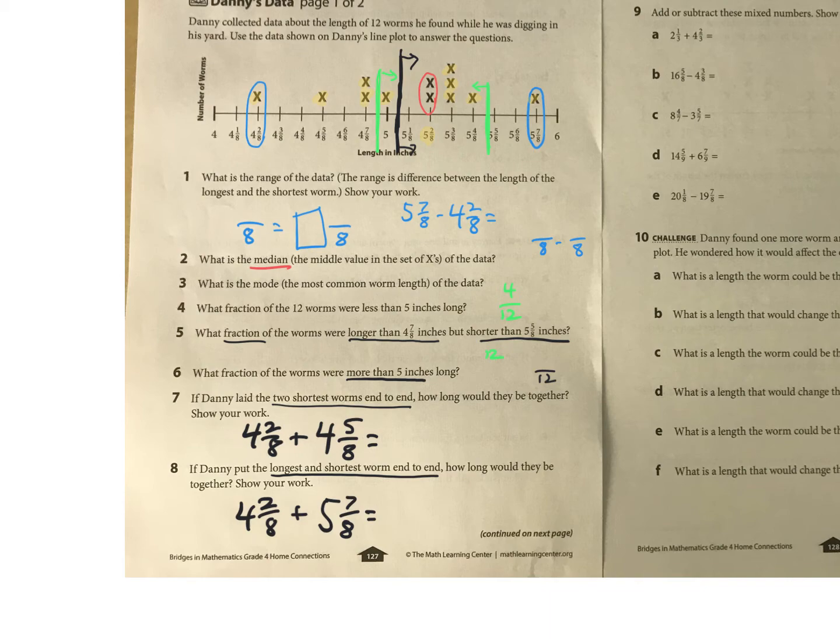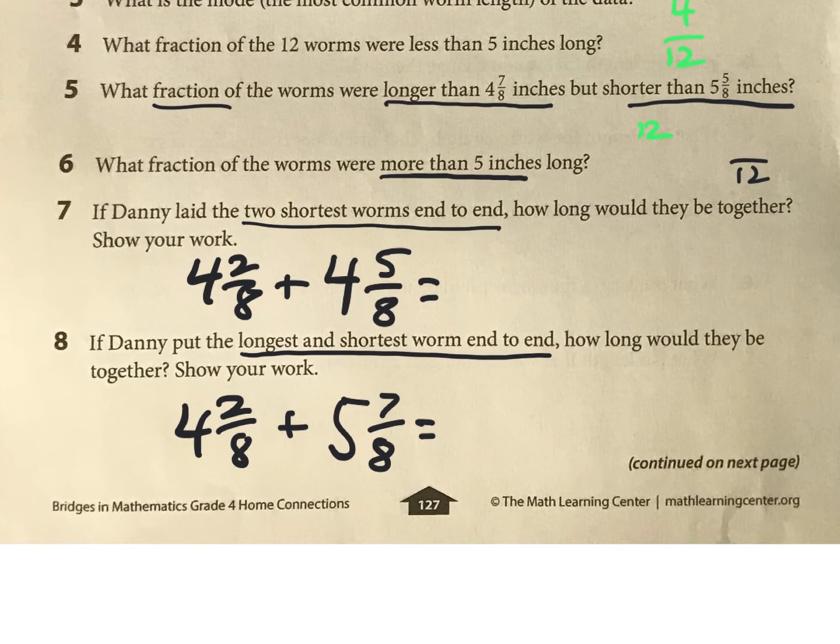And I think for number 7, if you just add the whole numbers 4 plus 4, and then you add the fractions, you should be okay. But this other one is a little bit trickier. So let's see—if we add 4 and 5, we're going to get 9, right? But if we add 2/8 and 7/8 together, that's going to give us 9/8, and we can't have 9 and 9/8. So change 9/8 to a mixed number, and then add that to 9. So what's 9 plus 1 and 1/8? And then you're going to have the final answer.